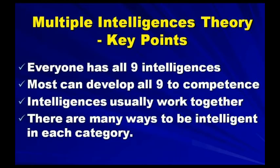Let's conclude. The key points in multiple intelligence theory are: everyone has all nine intelligences; most people can develop all nine to competence; intelligences usually work together; and there are many ways to be intelligent within each category. Thank you.